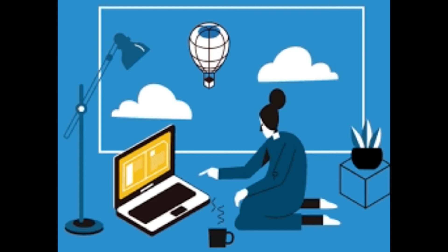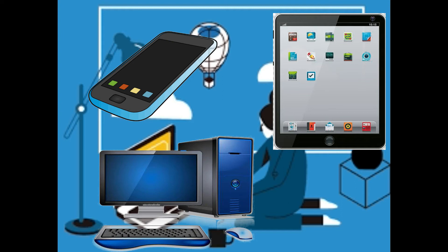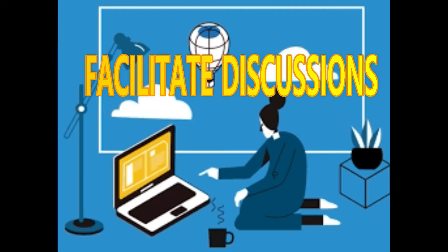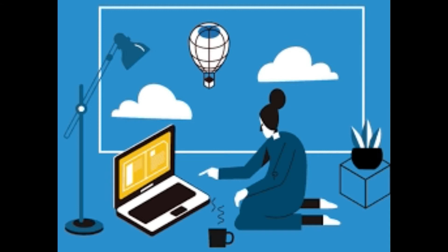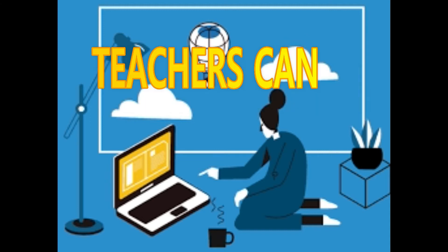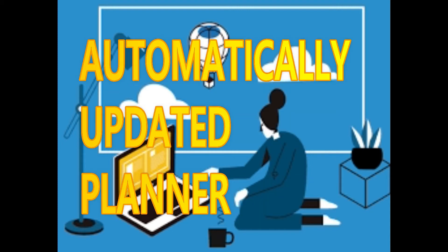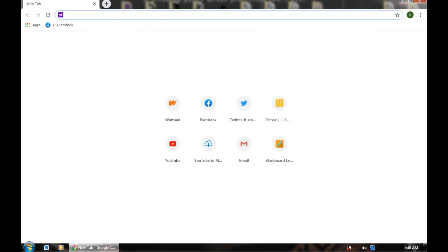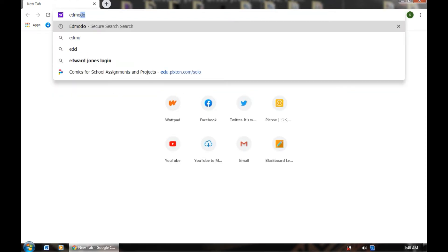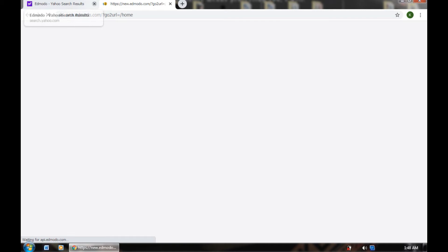Students can log in and participate from any phone, tablet, or computer. Teachers can facilitate discussions through checking students individually by direct messages. Through this app, teachers can help students stay organized with an automatically updated planner. Now that we know its characteristics, I will now be showing you how to use this software on your computer. You can also see directly in this video the characteristics of the app that have been discussed.